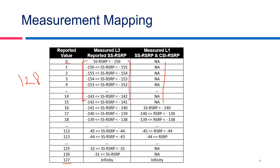Similarly, the higher values like 125 and 126 are also not applicable to layer 1 RSRP measurements — those are only related to layer 3 measurements.